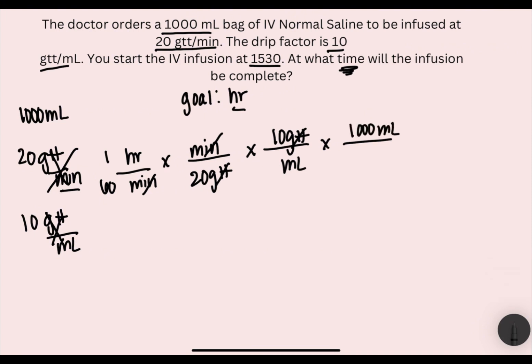We'll use our 1000 mL from the bag. Put it over one because it wasn't in a relationship — it was single. Cross it out. Everything is gone now except for hours. So we'll multiply across the top and divide across the bottom and get 8.3333 repeating hours.